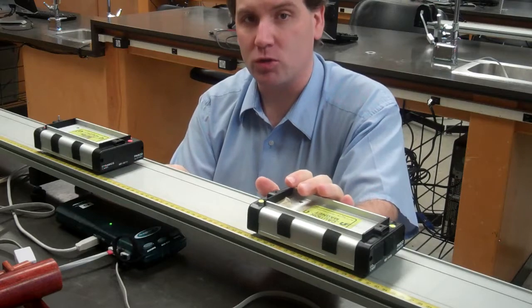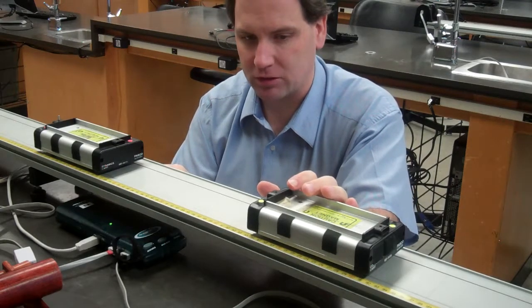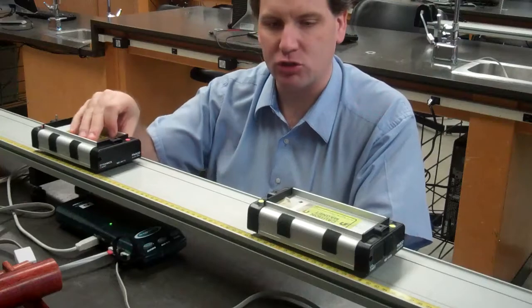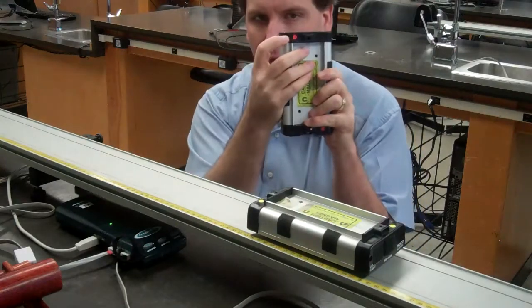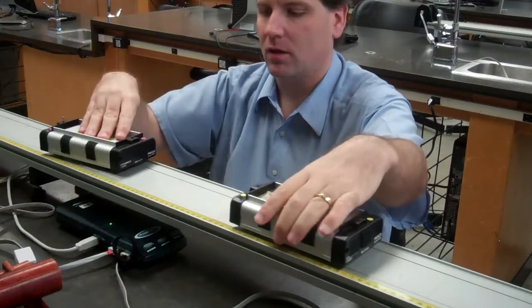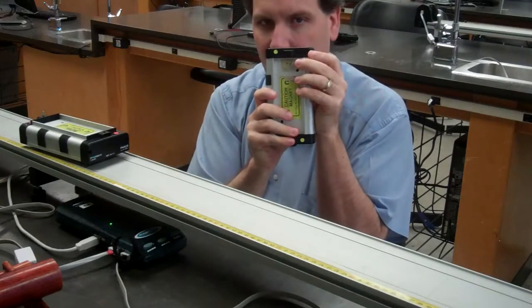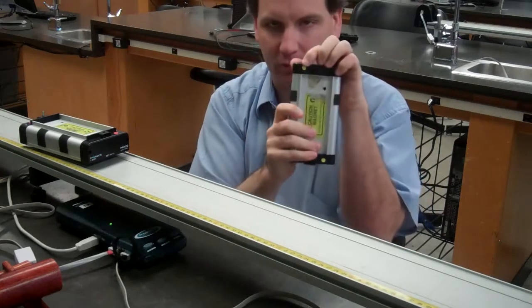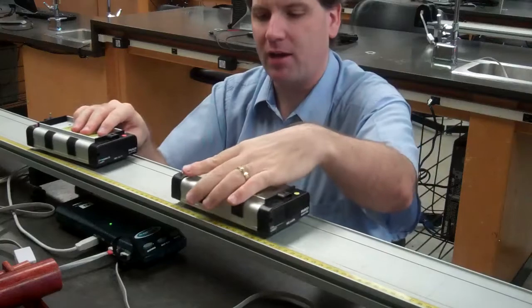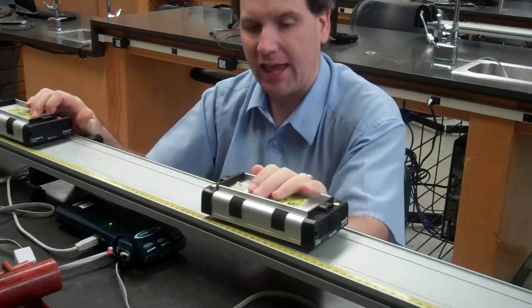In this one we're going to use two carts and two motion detectors. Now, the most important thing with the carts is make sure you get one cart that has a red dot and one cart that has a green or yellowish dot. Don't get two of the same kind or else you're going to have a hard time when you get to the later parts in the lab.